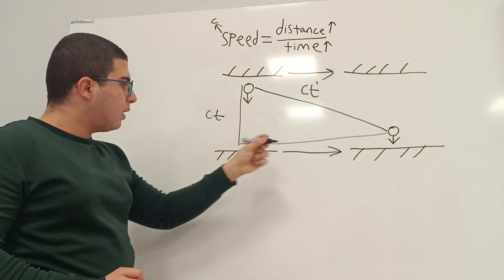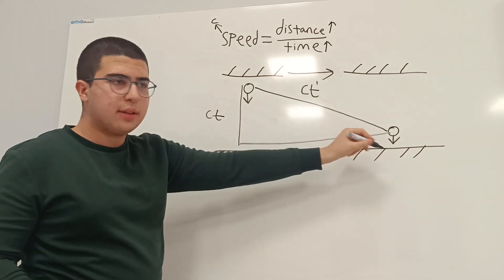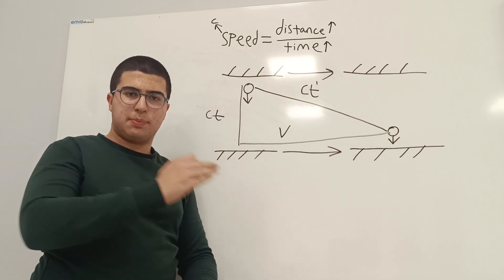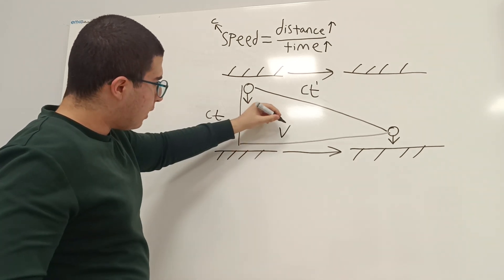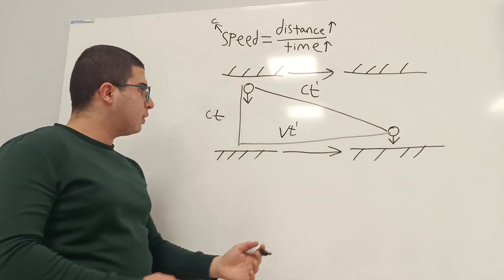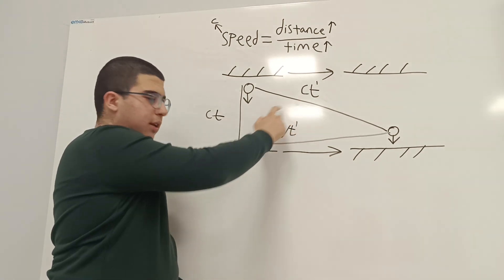So, it's t. And this long side is v, which is the speed of the spaceship, times t prime in their time. There's a triangle here. A right triangle.